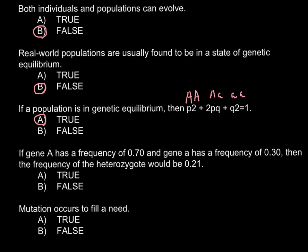The next statement is if gene capital A has a frequency of 0.7 and gene small a has a frequency of 0.3, then the frequency of the heterozygous would be 0.21. And this is a false statement because as you see,